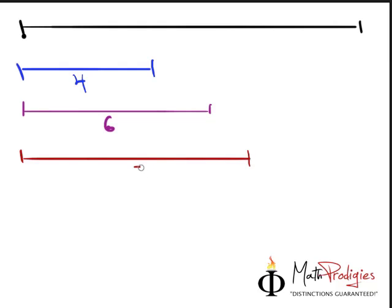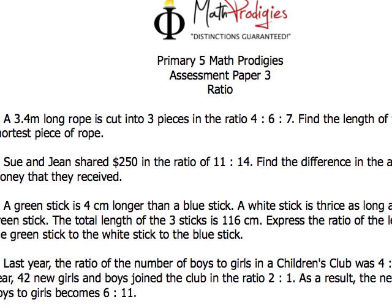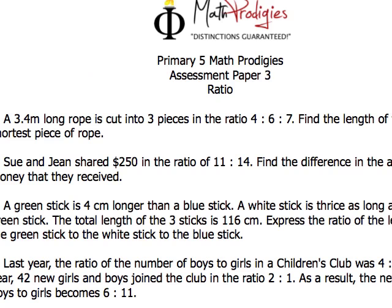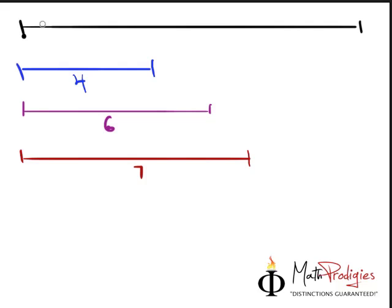Let's check for ourselves. Is it 4, 6, 7? Yes, it's 4, 6, 7. Okay, 4 units, 6 units, 7 units. And the total length is how much? Let's take a look again. 3.4 meters, right?